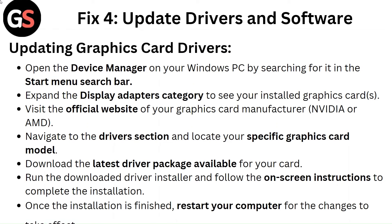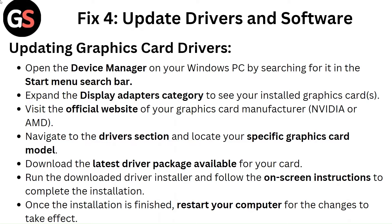Fix 4: Update drivers and software. To update your graphics card drivers, open Device Manager on your Windows PC by searching for it in the Start menu. Expand the Display Adapters category to see your installed graphics cards. Visit the official website of your graphics card manufacturer, Nvidia or AMD, navigate to the drivers section, and locate your specific graphics card model. Download the latest driver package, run the installer, and follow the on-screen instructions to complete the installation.